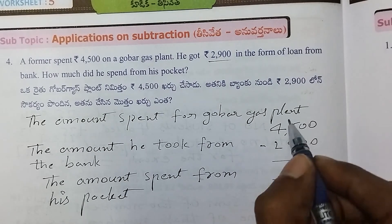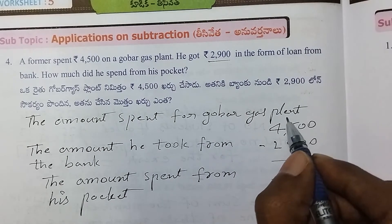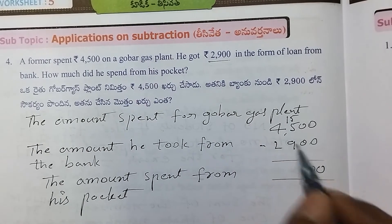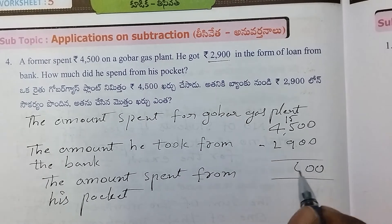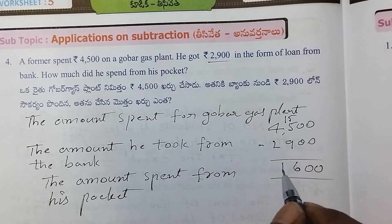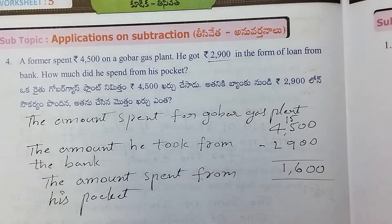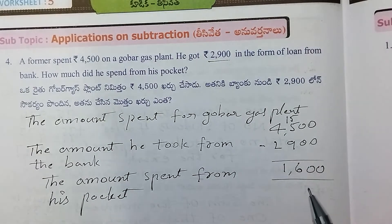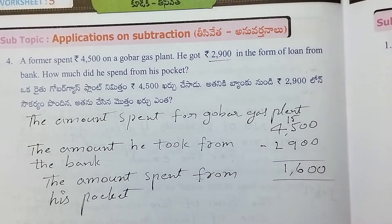$4,500 minus the loan amount. $3,000 and $1,000 gives $1,600 from his own pocket. That's right.